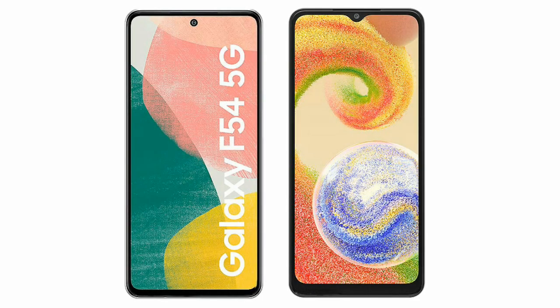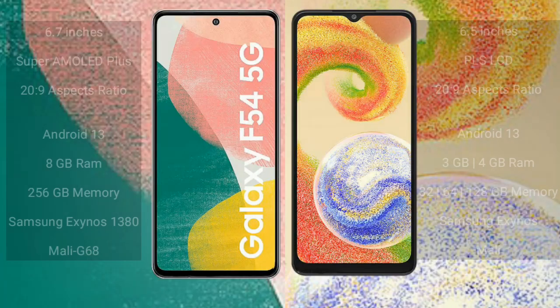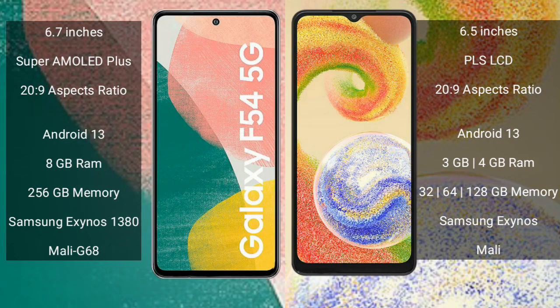I will compare the new Samsung Galaxy A54 with the Samsung Galaxy A4. Samsung Galaxy A54 comes with a 6.7-inch Super AMOLED Plus display with an aspect ratio of 20:9. Samsung Galaxy A4 comes with a 6.5-inch PLS LCD display with an aspect ratio of 20:9.